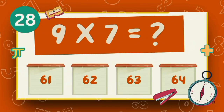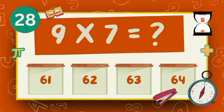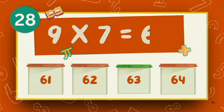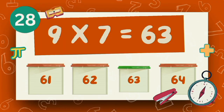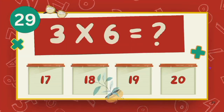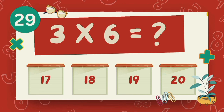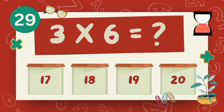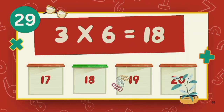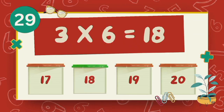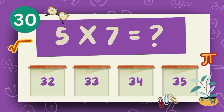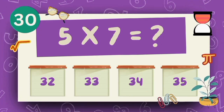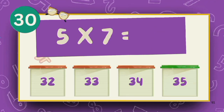What does 9 multiply 7? The answer is 7. What is 3 multiply 6? The answer is 6. What does 5 multiply 7? The answer is 35.